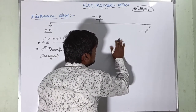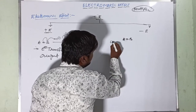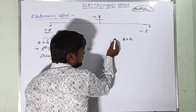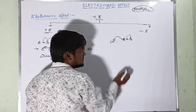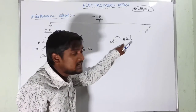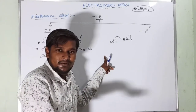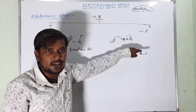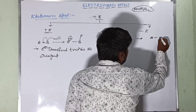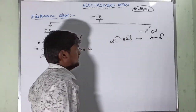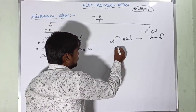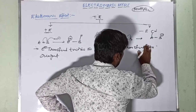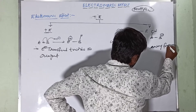In the −E effect, consider A=B where CN⁻ attacks over A. Then the bonded two electrons shift towards B — away from the reagent. Here A becomes positive and B becomes negative. The shifting of electrons takes place away from the group, away from the reagent.